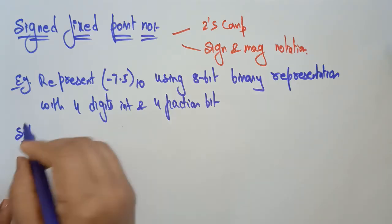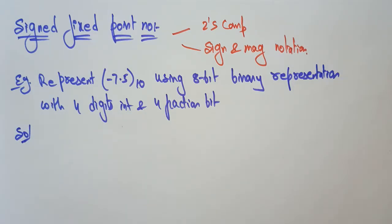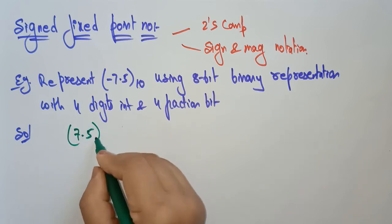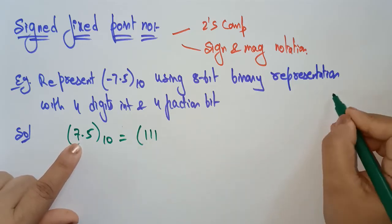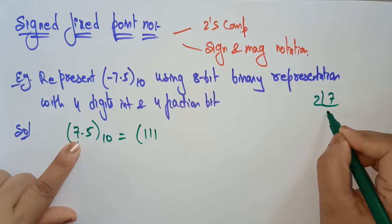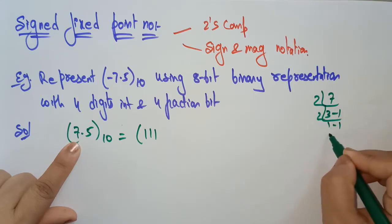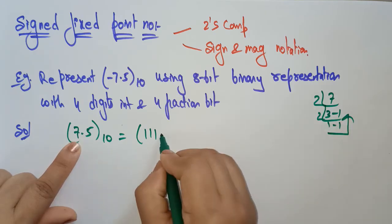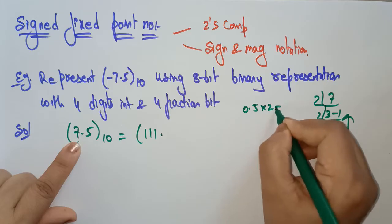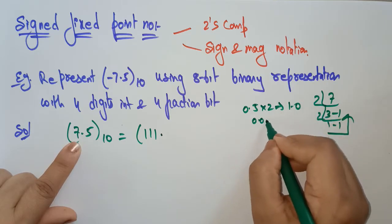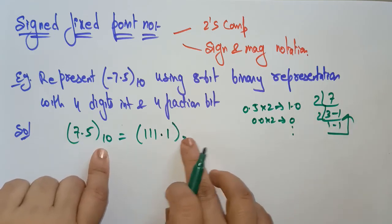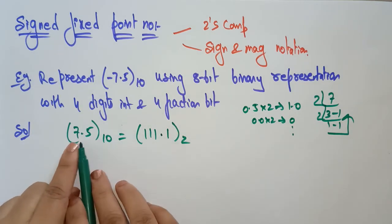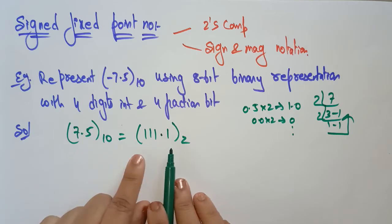Now let's convert. First, forget about the minus — just take 7.5. The binary equivalent of 7 is 1 1 1. For 0.5: 0.5 × 2 = 1.0, so we get 1. Therefore 7.5 in binary is 111.1. You can keep trailing zeros if needed, giving 111.1000 as the binary fraction.